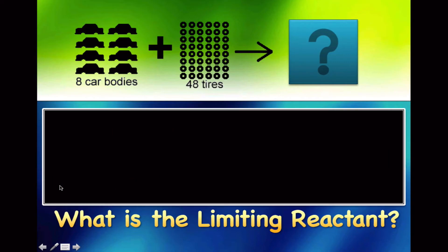We're going to use an analogy first with cars and tires. I have the frames for the car right here and I have 8 of them, and there are 48 tires. If I have 8 car bodies, I can make 8 cars, because one car body goes per car that I make.